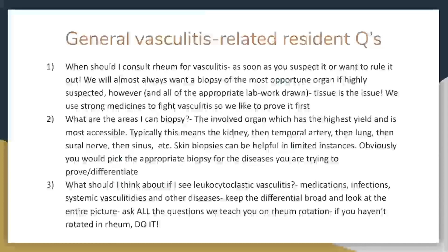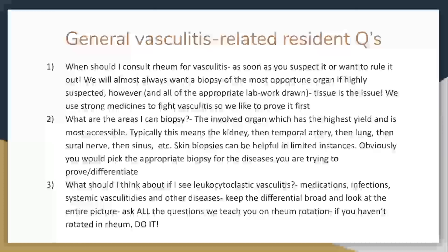The areas that you can biopsy: typically, if the kidney is involved, that's probably the place to go. It's pretty accessible and it's the highest yield biopsy. We're always going to go back and forth on temporal artery biopsy — that's the diagnosis in people with GCA. Then you know you're committed to steroids for a long, long time, or you can catch something else with it.